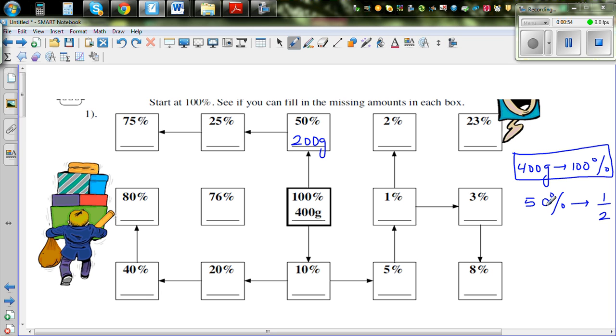25% is half of 50%. There are two lots of 25% in 50%. So from 50% you can find 25%, which is half of 50%, which is 100 grams.